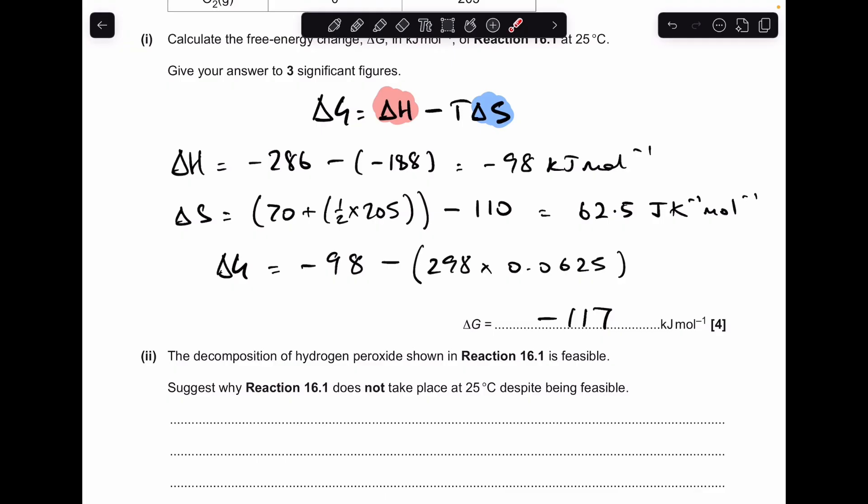Next part, we're told the decomposition is feasible. Well, that's because that's negative, ΔG. But it's saying, why does it not happen at 25 degrees C, despite being feasible? So there's a couple of answers you could give here. You could say the activation energy is too high, or the rate is too slow.